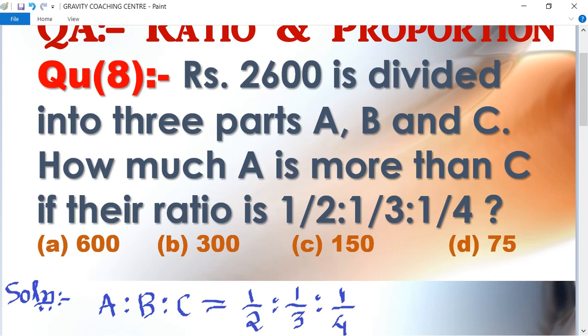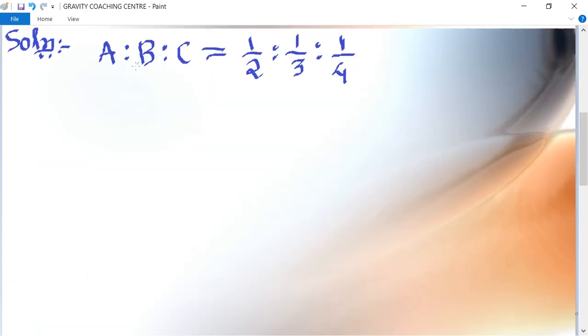Here given A:B:C equals to this ratio. So first we find the LCM of this number. The LCM is 12.